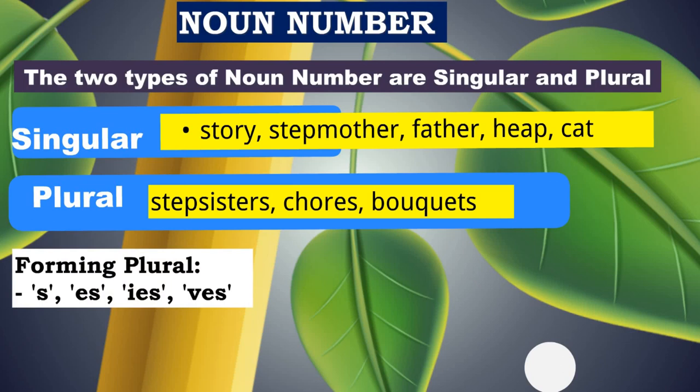Now how do you form plurals? Plurals can be formed by simply adding S — for example, book becomes books. Or you put ES — mango becomes mangoes. Then IES: words which end with Y, in plural the Y goes and becomes IES. So for example, story becomes stories — S-T-O-R, Y goes and IES comes in its place. Similarly, VES: words ending with F end in plural with VES. So calf becomes calves — C-A-L-V-E-S.